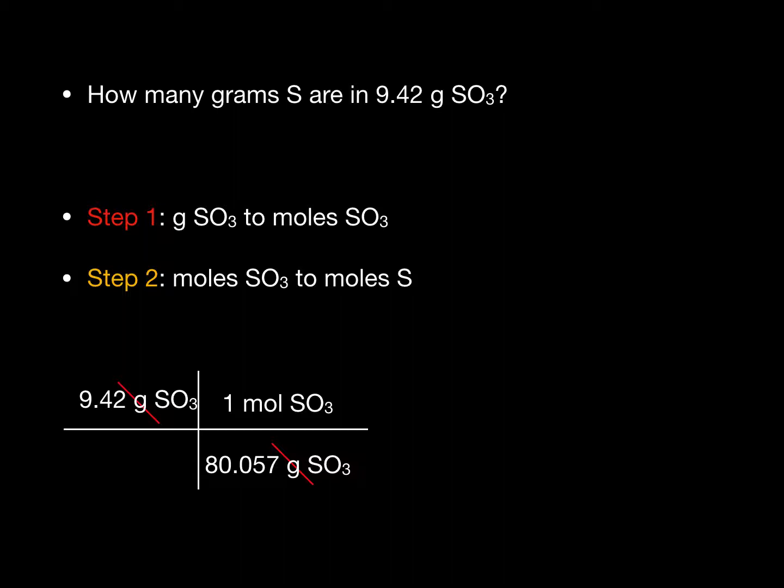Now that we have moles of sulfur trioxide, we can begin to think about converting to moles of sulfur. In the formula SO3, there is no number next to the sulfur, which implies a one. We have one mole of sulfur per one mole of sulfur trioxide.